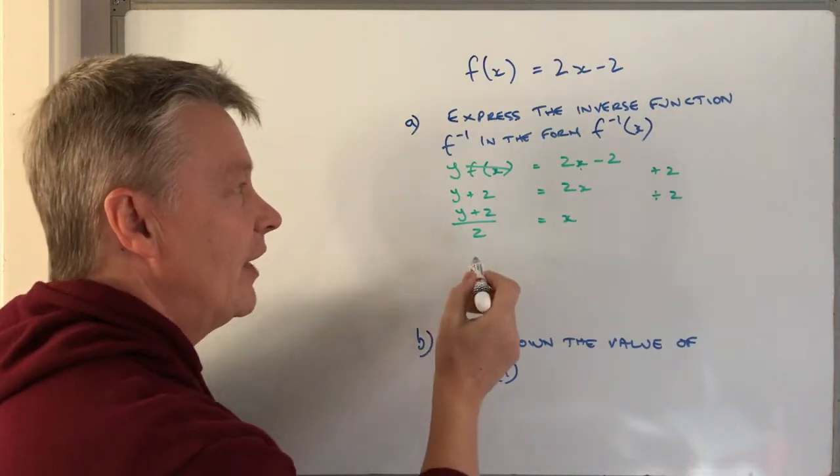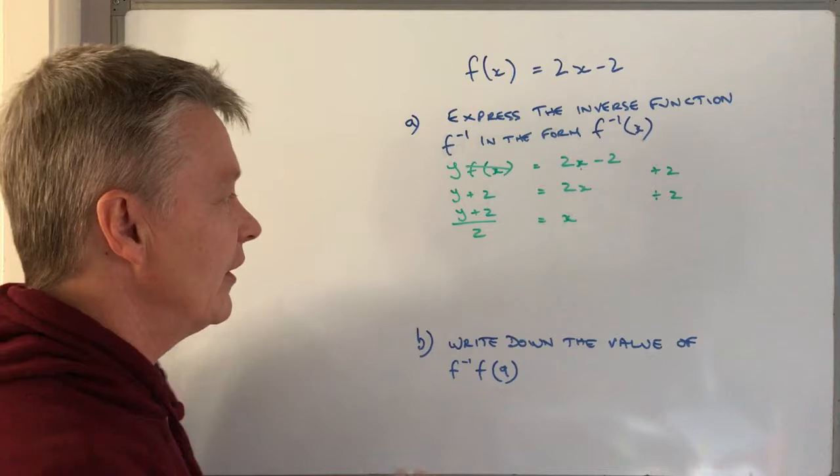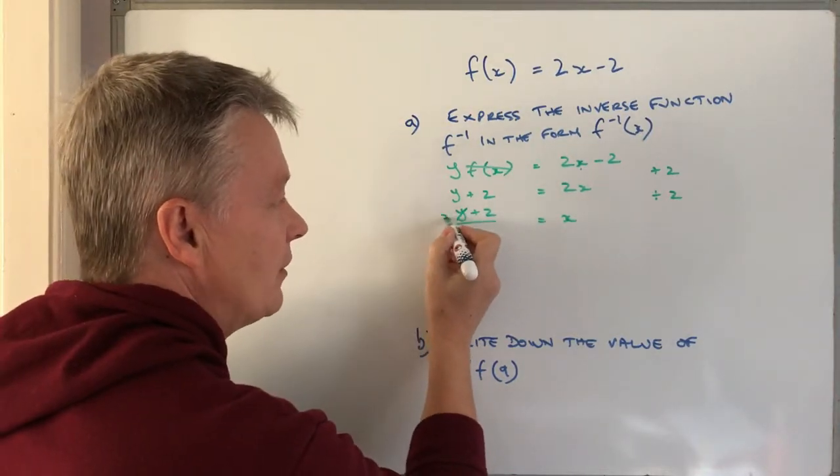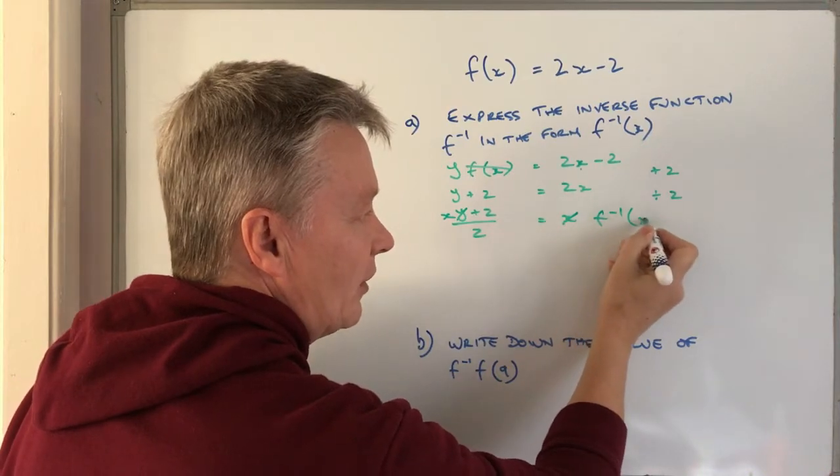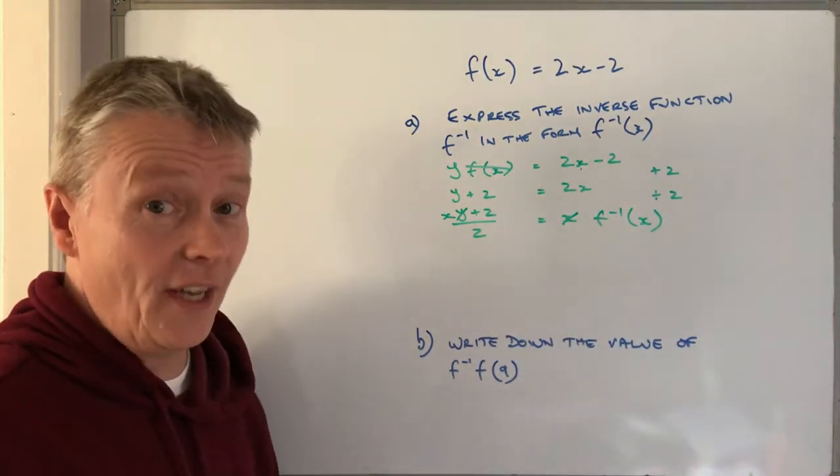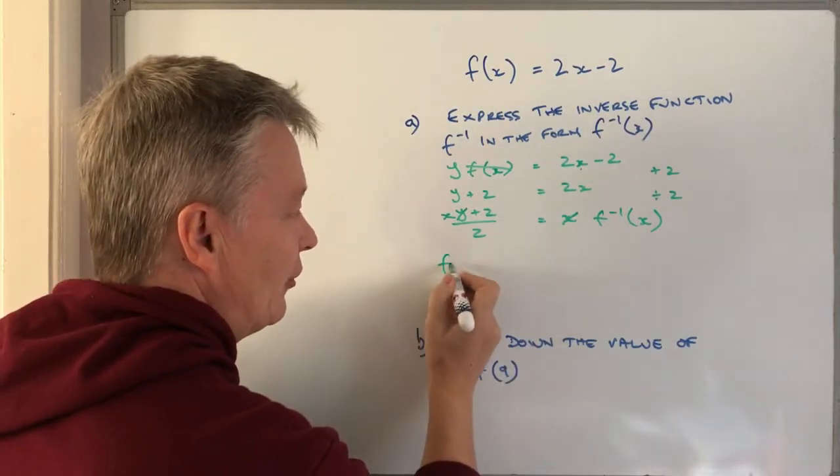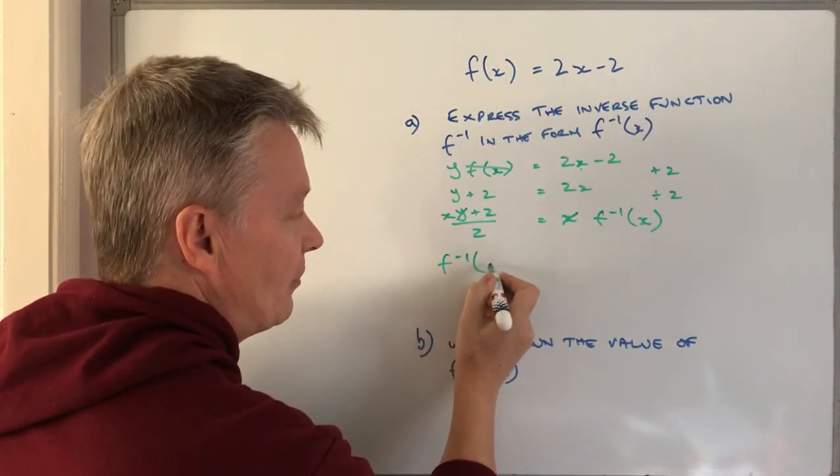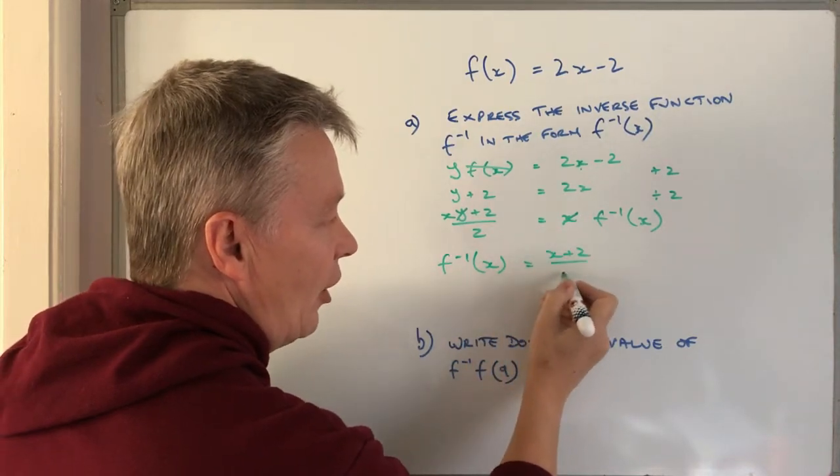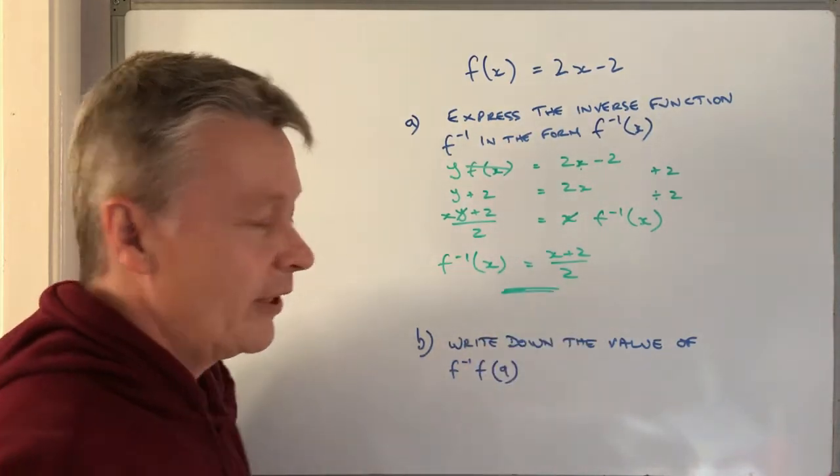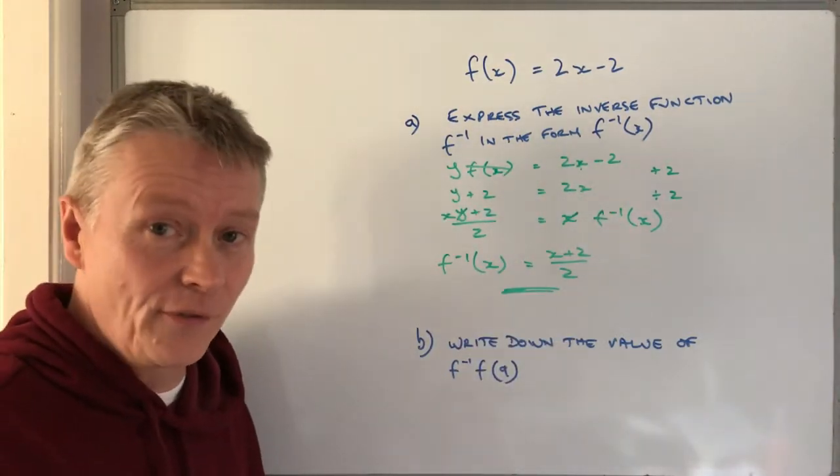So in order to answer the question the final part of the method is to change this y back to x again and change this x to f⁻¹(x) and that will actually answer this question. So if I just write this out for you that's going to give you f⁻¹(x) = (x + 2)/2 and that will be the answer to this question. So that's the technique to use for that.